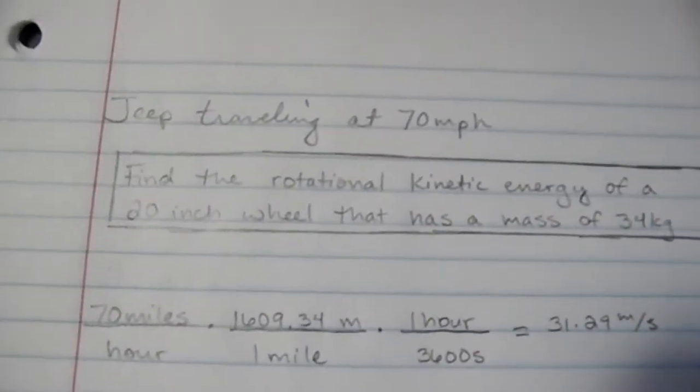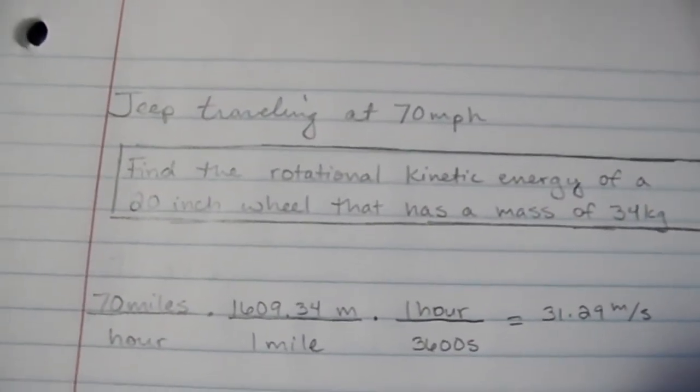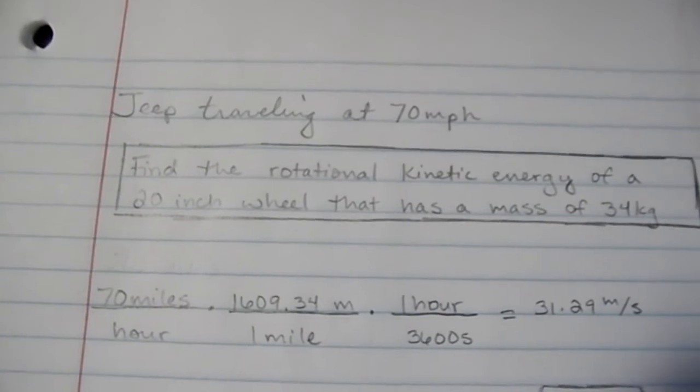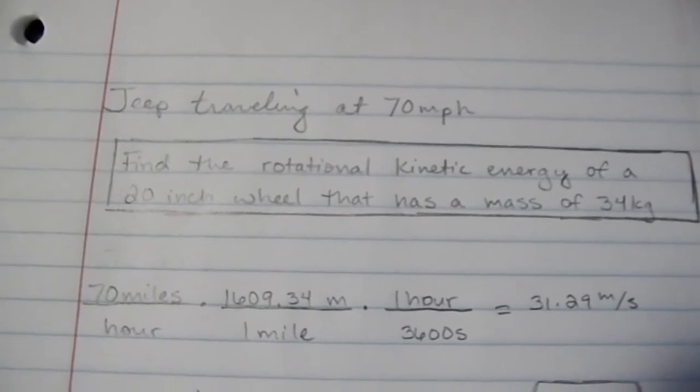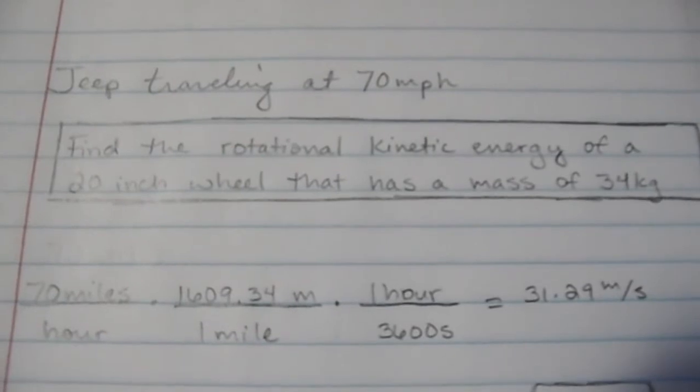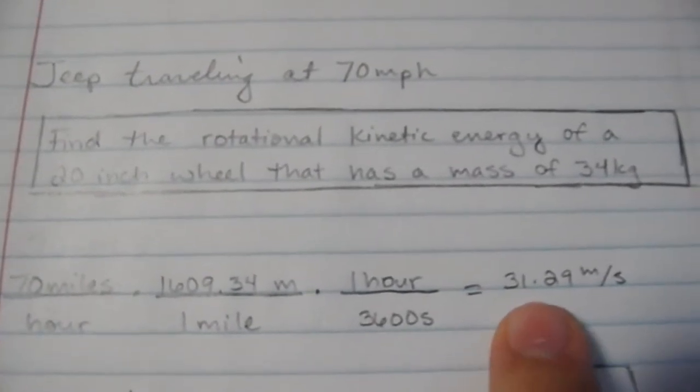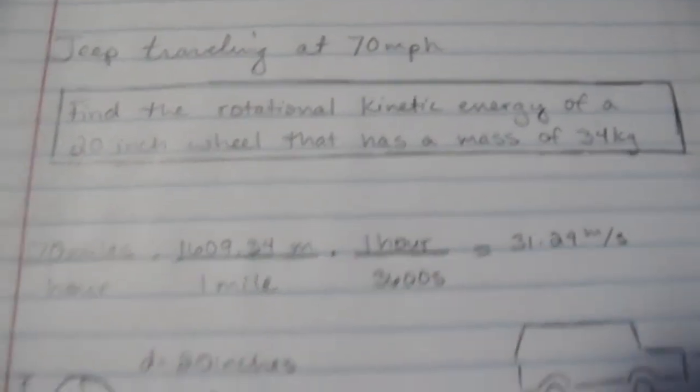Now first is to convert, do a little unit conversion, our 70 miles per hour into meters per second so that it works better with our formulas and concepts. There's a little conversion, and then we have 31.29 meters per second.